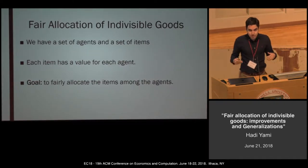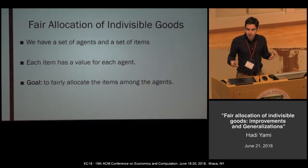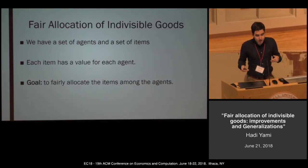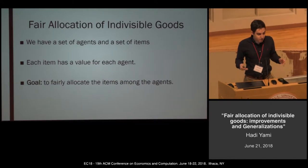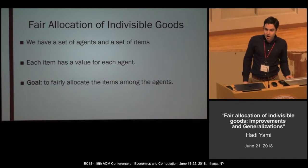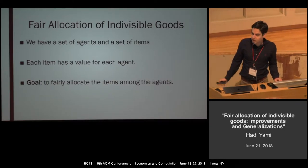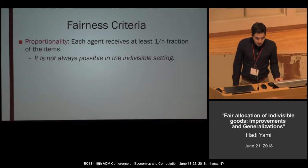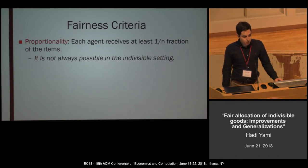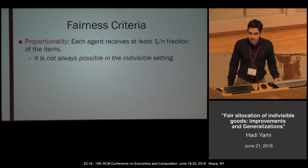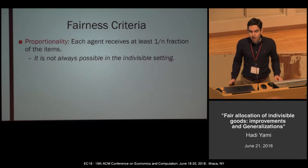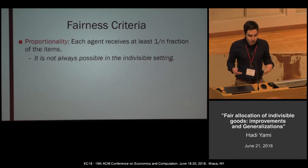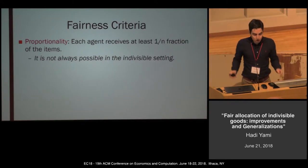Generally in the fair allocation problem of indivisible goods, we have some agents and some items and we want to allocate these items to the agents. Each item has a value for each agent and these valuation functions may differ. Our goal is to fairly allocate the items among the agents.